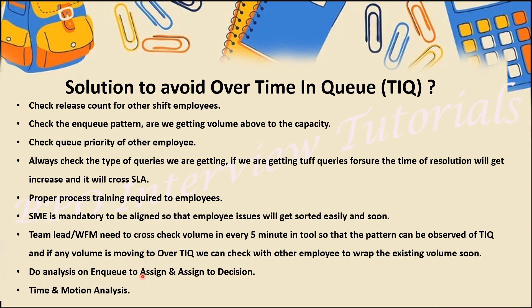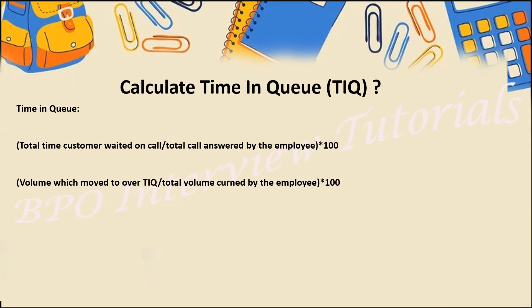For calling, email, or chat processes, do analysis on Enqueue-to-Assign and Assign-to-Decision. Enqueue-to-Assign is when volume got queued in the machine — say 7 PM. Assign-to-Decision is when the final employee gives the resolution — say 9 AM the next day. We need to capture that time to see how many employees worked on that volume, whether they released correctly, or if a technical glitch caused it to move to Over TIQ. Time-and-motion analysis is also required for new processes to understand why employees are taking more time.